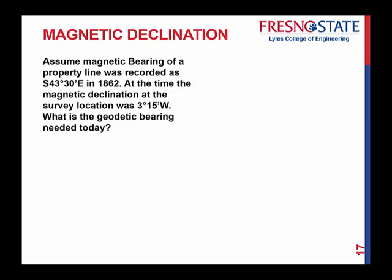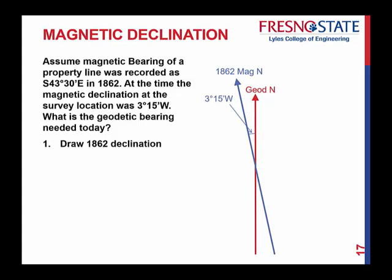Let's give you some examples using station sketches so you can get a better handle on what we're talking about. As you understand declination, this is where it comes down to actual practice when you do these station sketches. Let's assume you had a magnetic bearing of a property line recorded as south 43 degrees 30 minutes east in 1862. At that time, the magnetic declination at the survey location was 3 degrees 15 minutes west. We want to know what the geodetic bearing is needed today for that same location — what our bearing is today based on true north.